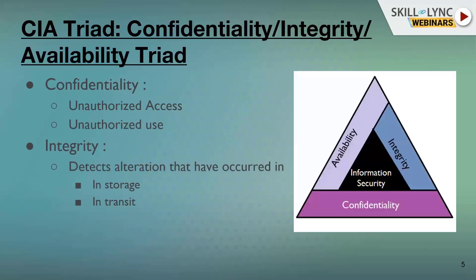The most important concept that comes while discussing information security is the CIA Triad — a combination of three components. One is Confidentiality. Second is Integrity. And third is Availability. Confidentiality, integrity, and availability — this is the most important and most basic concept of information security.